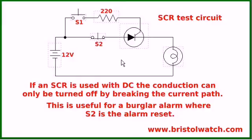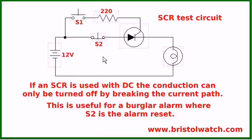This is handy, for instance, in using burglar alarms, where this might be a window switch that switches on the alarm, but you cannot turn it off until you hit the reset. So remember, if you have a DC source and you are using it with an SCR, it will not turn off until you break the current path.